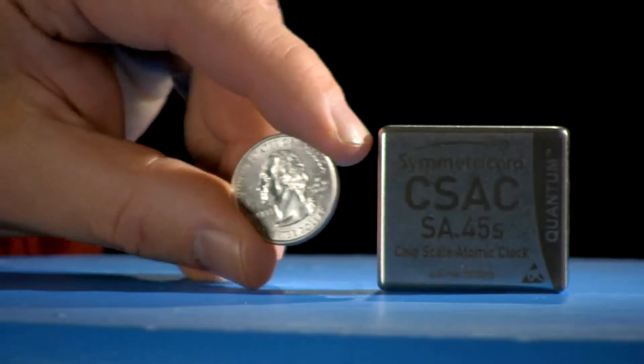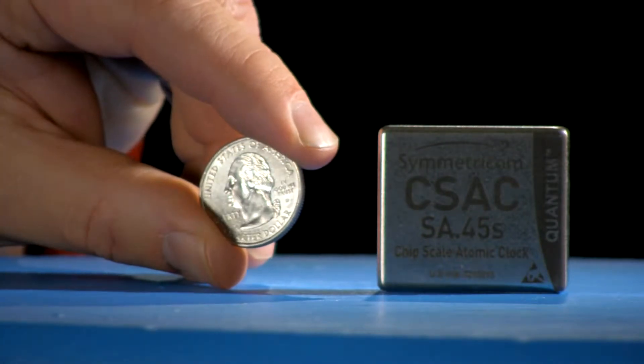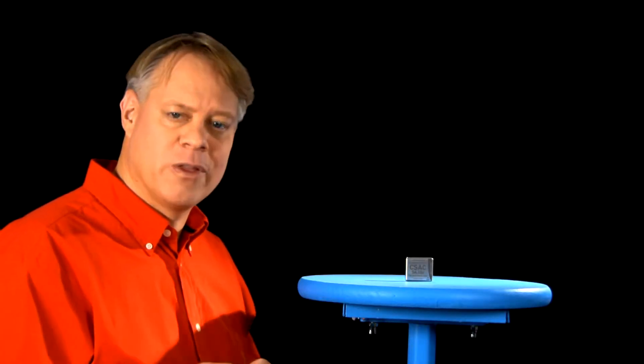That's right, this tiny device, about the size of a quarter, is an atomic clock. The most accurate atomic clocks lose about a second over 138 million years.